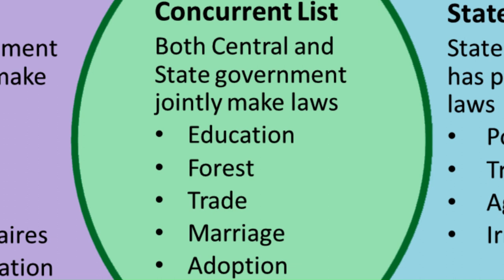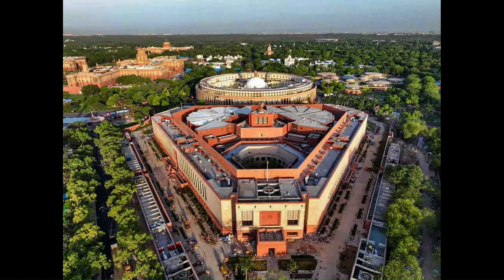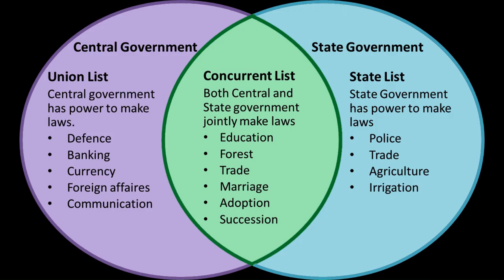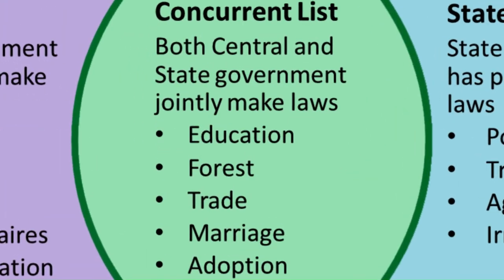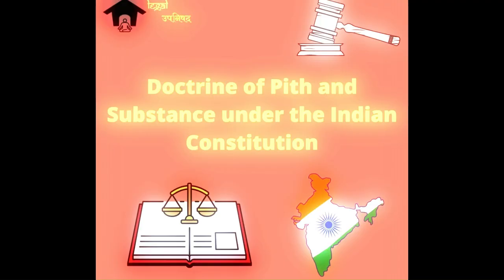But in the matter of conflict, the laws made or formed by the centre shall prevail. The doctrine of pith and substance states that within their respective spheres, the state and the union legislatures are made supreme. They should not encroach upon the sphere demarcated for the other. So basically, it resolves conflict on the matter of who will be the one to form laws on concurrent list subjects, as dealt with under Article 246.